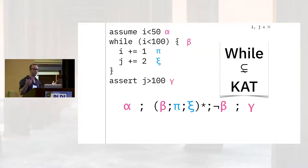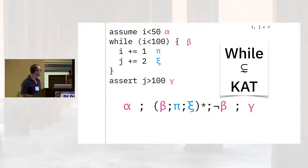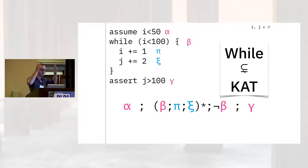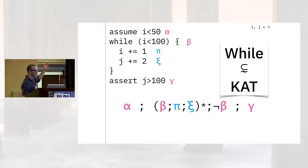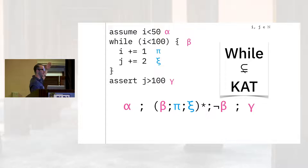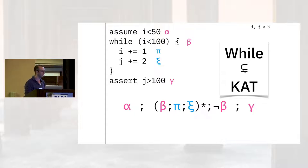Here's a while program that uses a while loop — the signature feature. It's a little more complicated; we've got some assume/assert stuff, so some verification ideas are going through your head. Supposing that i starts out less than 50 (alpha), while i is less than 100 we'll increment i and double increment j. At the end, we expect j to be greater than 100. This assertion should always hold because we're going to do at least 50 runs of the loop.